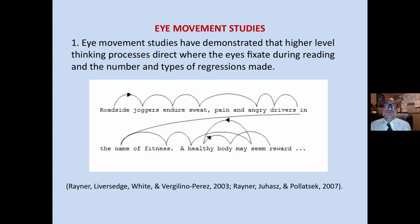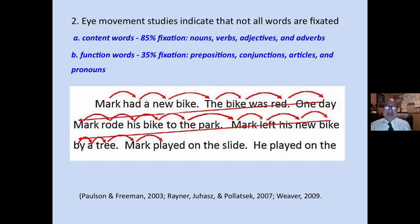First of all, eye movement studies. These have demonstrated that higher-level thinking processes actually direct where the eyes fixate or stop during reading, and the number and types of regressions that we make. We go back and we read words. So what's in the head directs the eyes during the act of reading.